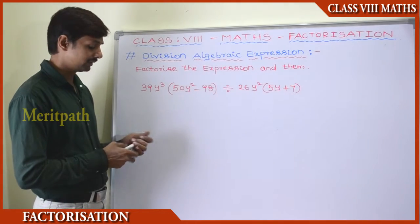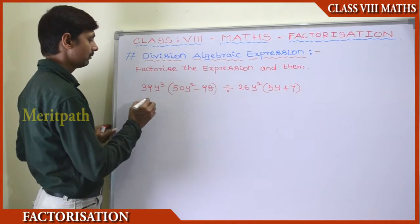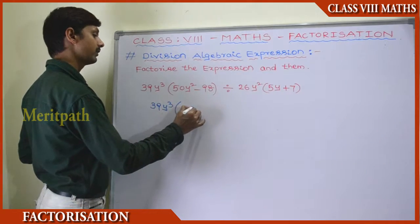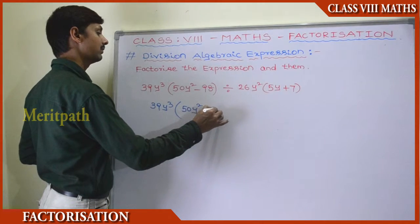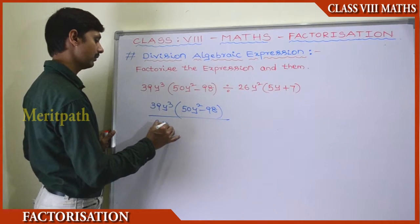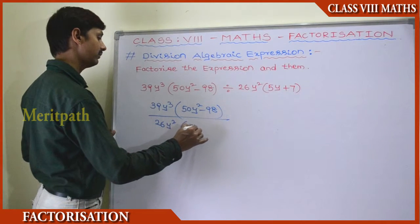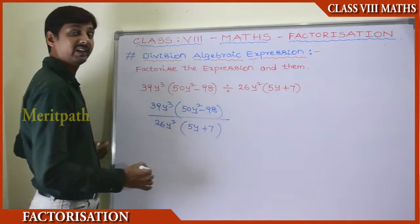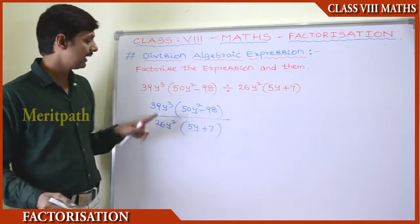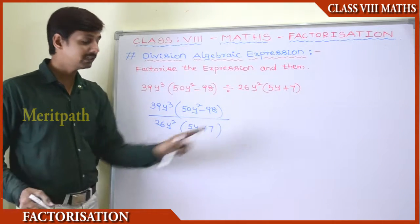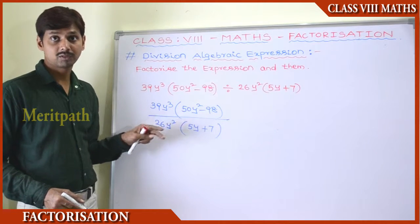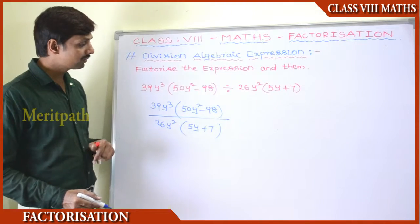When we are dividing these two algebraic expressions, write this: 39y³ into (50y² − 98), divided by 26y² into (5y + 7). Instead of the division symbol, we have used the divided-by notation, and we have written these two terms.